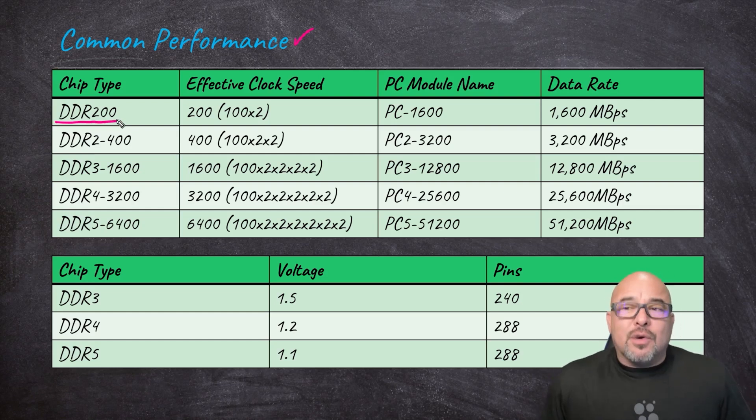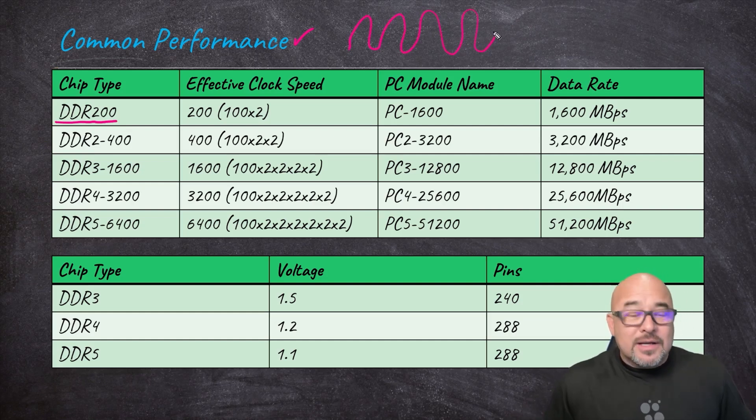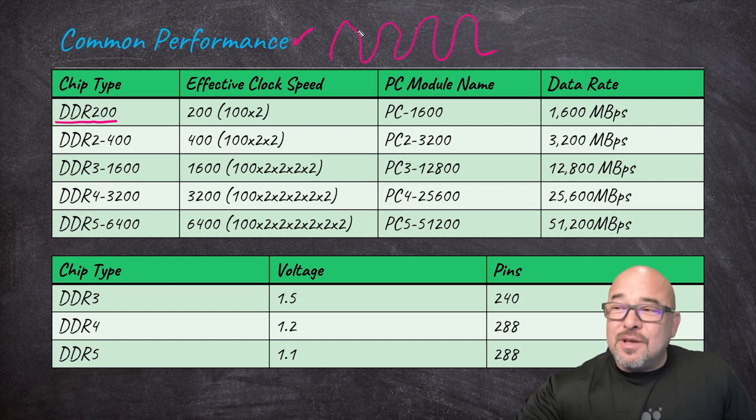Double Data Rate, we already talked about what that is. Remember it was able to send and receive memory data on the rising and the falling cycle. What is DDR200? It has the ability not only to take advantage of sending and receiving data in and out of memory on the top of the cycle and the bottom of the cycle, it's also able to split the signal. So now it can do it on top, bottom, and it doubles it. Now in addition to doing on the top and the bottom of the signal, we've doubled it to give us an effective clock speed of 200.